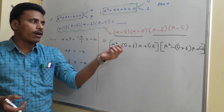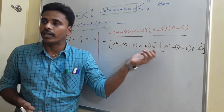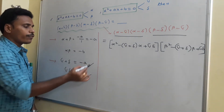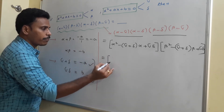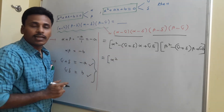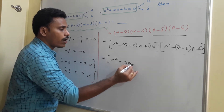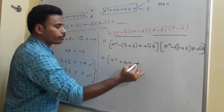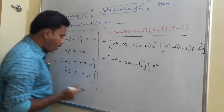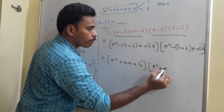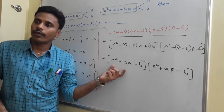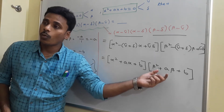Both brackets involve gamma+delta and gamma·delta. Replace gamma+delta with minus a and gamma·delta with b. The first bracket becomes alpha² plus a·alpha plus b. The second bracket becomes beta² plus a·beta plus b.